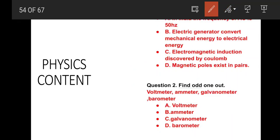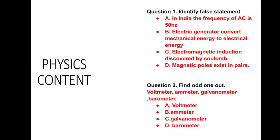Question number 2: Find the odd one out. Voltmeter, emitter, galvanometer, and barometer. The correct answer is barometer. Barometer is the odd one out in this group.